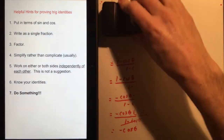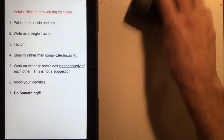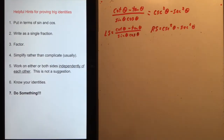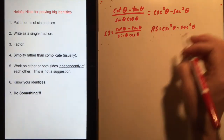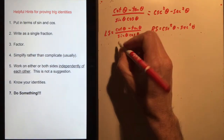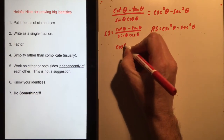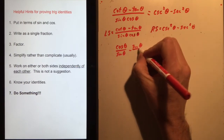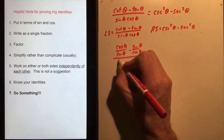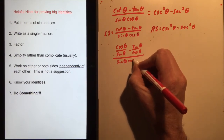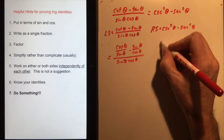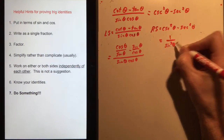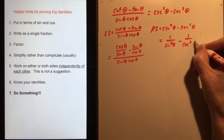That one wasn't too bad in the end. Let's try another one that looks more complex. Start by turning things into sine and cosine using the ratio identities: cotangent becomes cosθ/sinθ, minus sinθ/cosθ, all over sinθcosθ. The right side becomes 1/sin²θ minus 1/cos²θ.